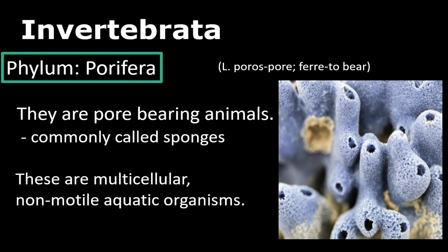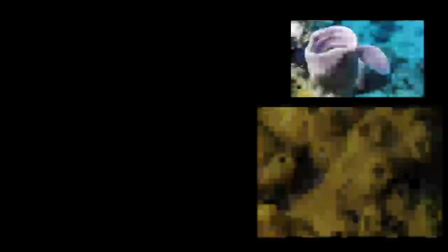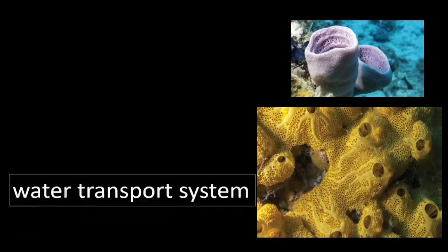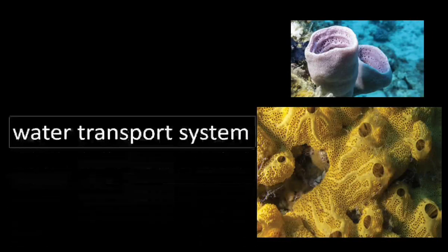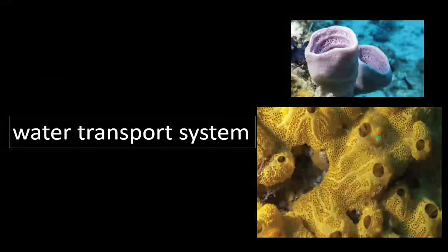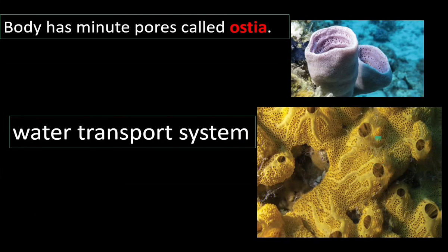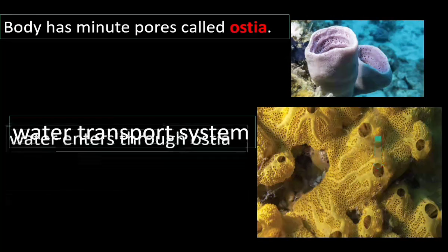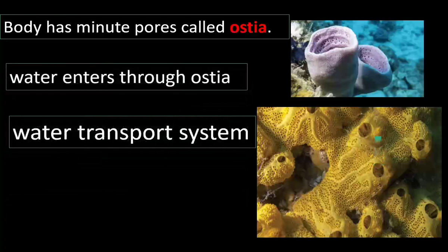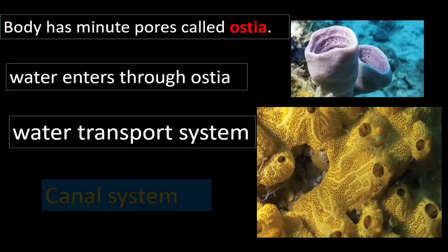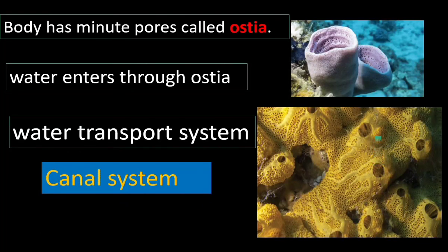Non-motile organisms do not move from one place to another place. Sponges have a water transport system. Water enters inside the body through small openings called ostia. The transport system through which the water flows is called the canal system, which is found in sponges.